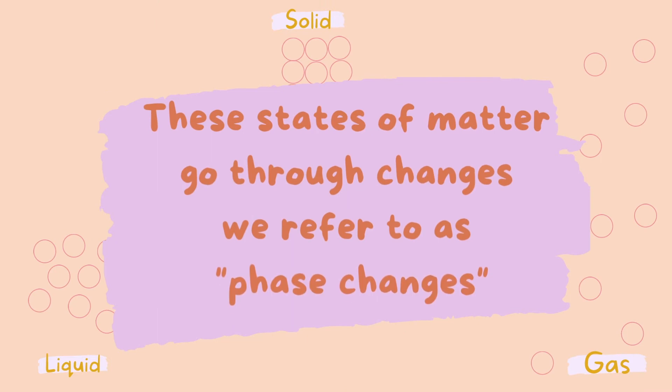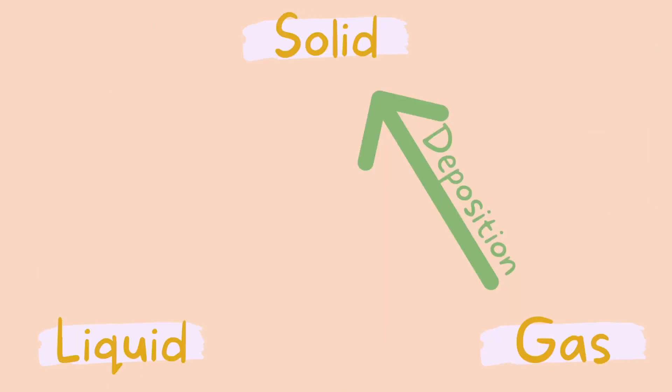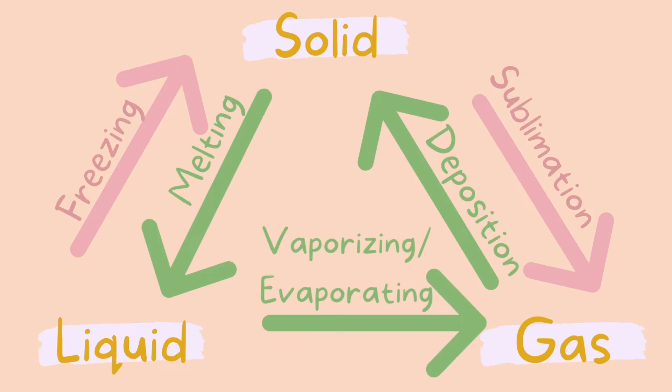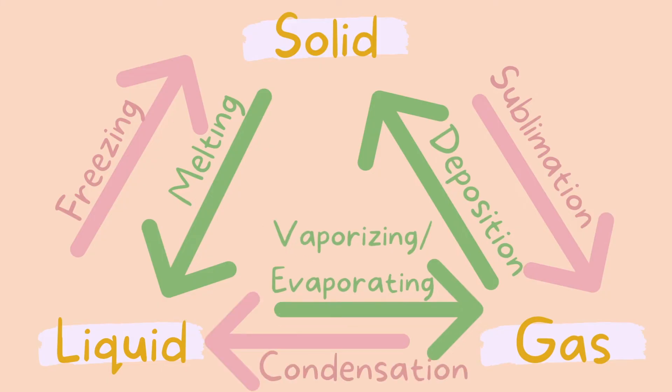These states of matter go through changes we call phase changes. When a gas turns into a solid, it's called deposition. Solid to a gas is called sublimation. Solid to a liquid is melting. Liquid to a solid is freezing. Liquid to a gas is evaporation or vaporization. And gas to a liquid is condensation.